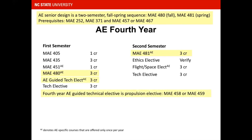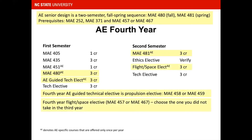The fourth year AE Guided Technical Elective is the Propulsion Elective. Choose from MAE 458 or MAE 459. For the fourth year Flight/Space Elective, you will choose the course you did not take in the third year, either MAE 457 or MAE 467.